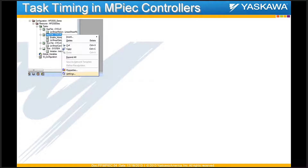Most of you who've used either Express or Pro for MotionWorks IEC have gone into their resource and set your task updates — for a single task in MotionWorks IEC Express, and for multiple tasks in MotionWorks IEC Pro. To set the task, if you right-click on a particular task, there is an option for you to set the update interval.